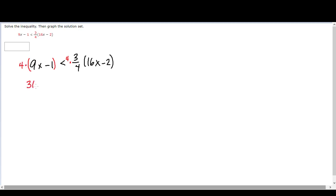So on the left-hand side, we have 36x minus 4 less than, and so the 4 here cancels that 4 there, and so I'm left with 3 parentheses 16x minus 2. And now we have something that doesn't have fractions.